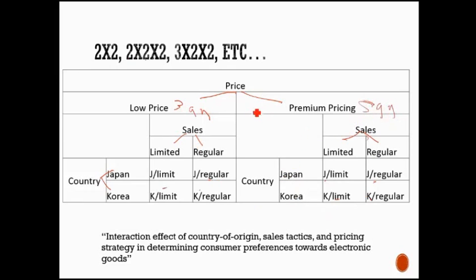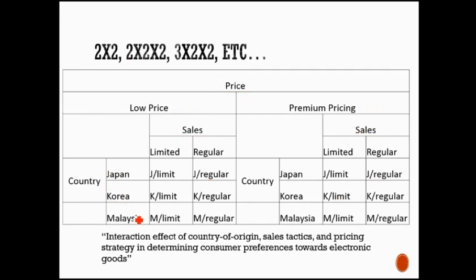So you need eight versions of the questionnaire in order to be able to answer this design correctly, so it gets complicated, right, what if you want to add another country, Japan, Korea, what if you want to add Malaysia, right, then you would need, then this would be a three by two by two.